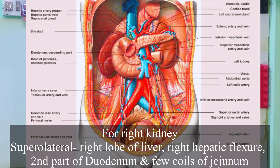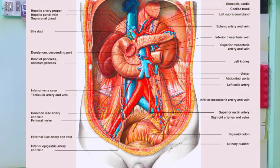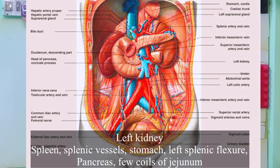Also anteriorly on the right kidney you find a few coils of jejunum. For the left kidney you find especially the spleen, splenic vessels, stomach, pancreas, left splenic flexure of the large colon, and coils of jejunum. That is the complete relationship of our kidneys.